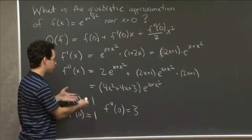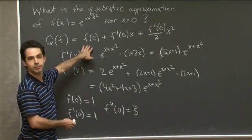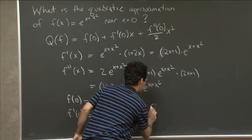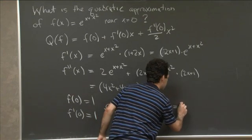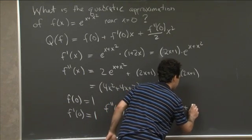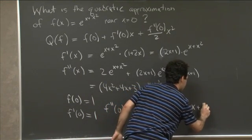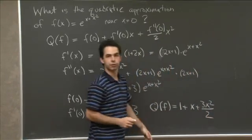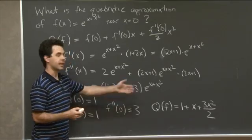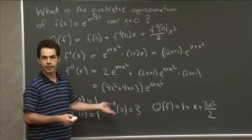And now I just take these three values and I plug them right into my formula. So the quadratic approximation Q(f) equals 1 + x + 3x²/2. All right, great. So that was one way to do this problem.